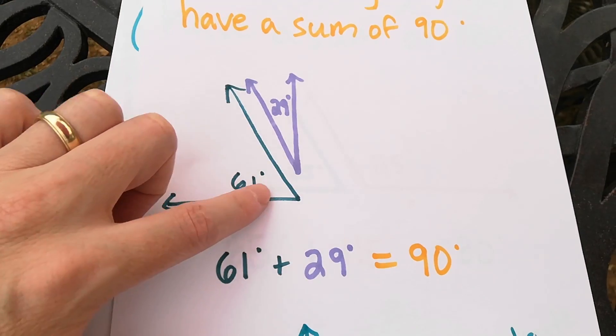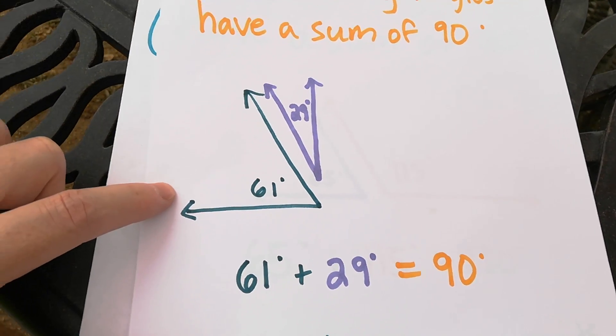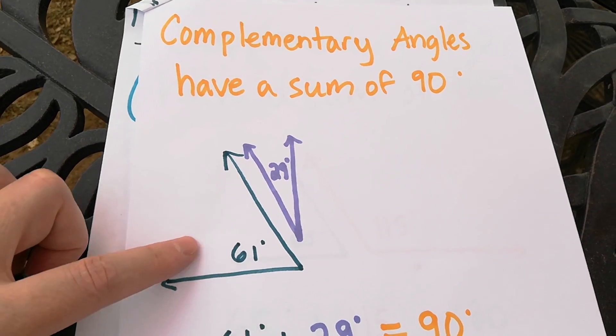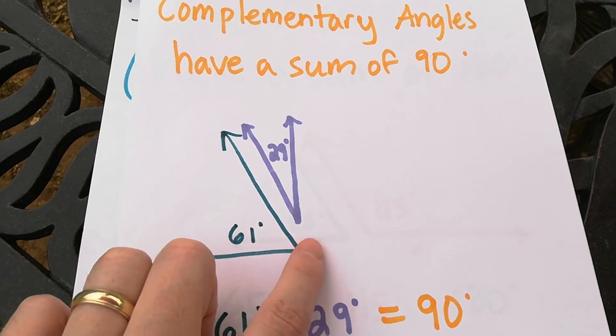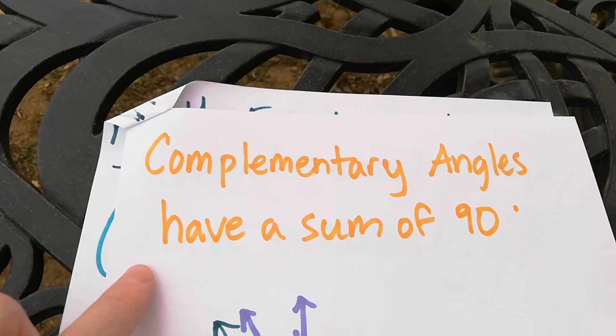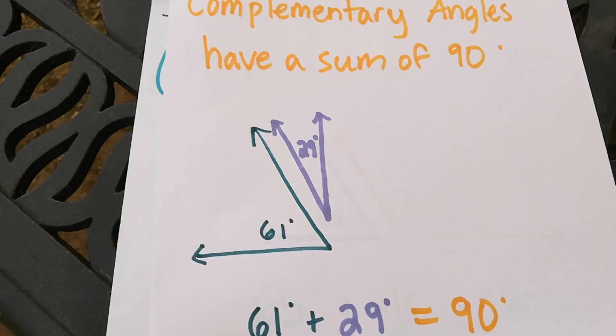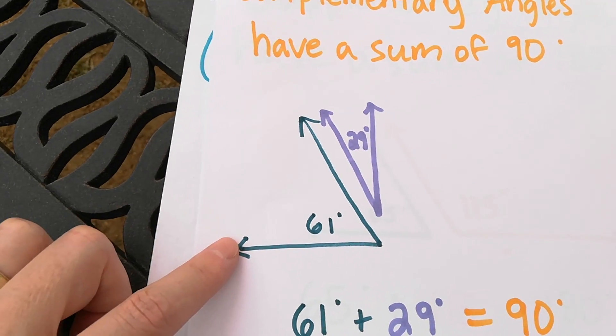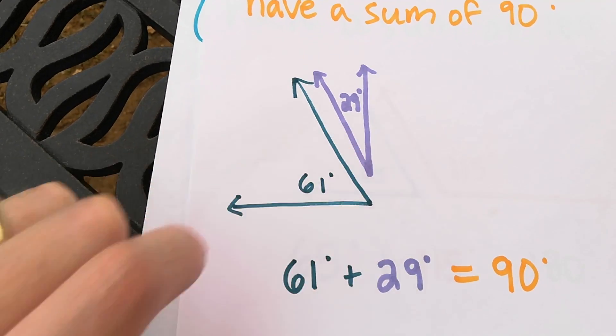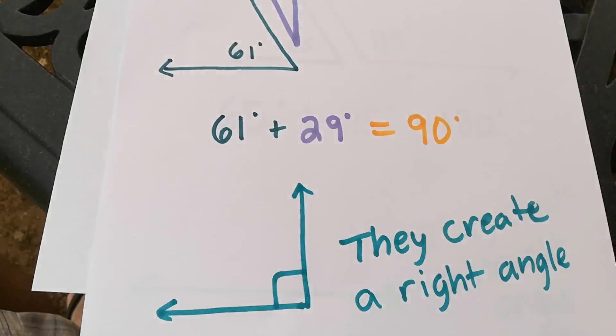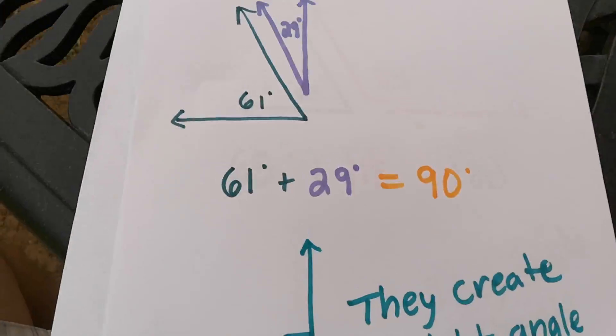For example, if I have a 61 degree angle here, and I say what's complementary to that? Well, it's like what fits perfectly to create a 90 degree angle, right? Complementary angles have a sum of 90 degrees. So 61 plus what is 90? Well, if you took 90 and you subtracted the 61, you'd find out that you're missing the 29 piece. So that means that they create a perfect right angle. They are complementary. This stuff's pretty darn easy. Let's go ahead and look next.